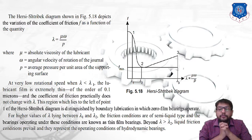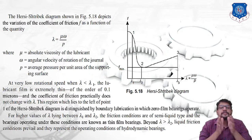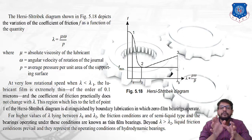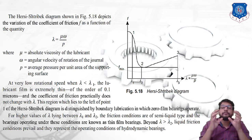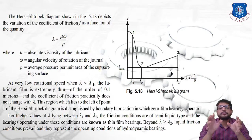At very low rotational speed, when lambda is less than lambda₁, the lubricant film is extremely thin — of the order of 0.1 microns — and the coefficient of friction practically does not change with lambda. This region, to the left of point 1 on the Hersey-Stribeck diagram, is distinguished by boundary lubrication, where zero film bearings operate. For lambda between lambda₁ and lambda₂, friction conditions are of semi-liquid type (thin film bearings). Beyond lambda₂, liquid friction conditions prevail, representing hydrodynamic bearing operation.